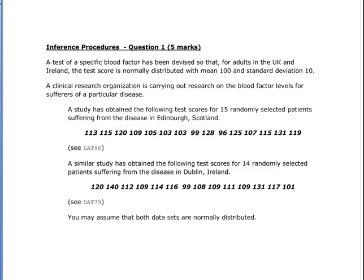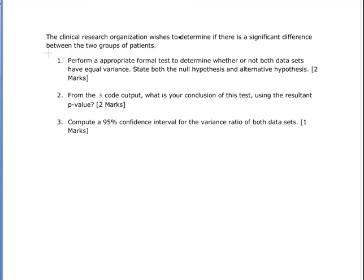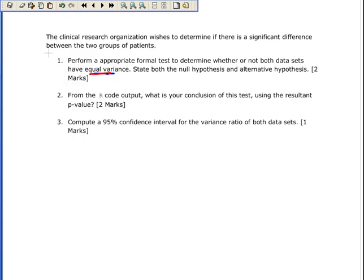What we're going to do is test whether both groups are the same. The clinical research organization wishes to determine if there's a significant difference between the two groups. First off, we need to check whether both data sets have equal variance. Actually, what I should say is, can we assume that both populations have equal variance? The null hypothesis is that the variance of Scottish patients equals the variance of Irish patients.